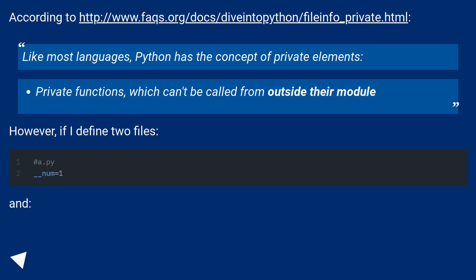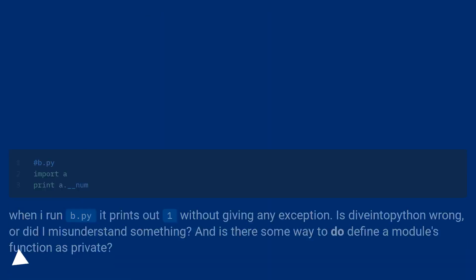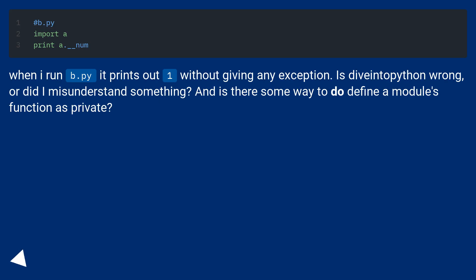However, if I define two files, when I run b.py, it prints out one without giving any exception. Is that even Python wrong? Or did I misunderstand something? And is there some way to define a module's function as private?